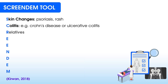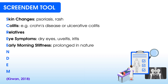R stands for relatives. If a patient explains they have a family history of something like psoriatic arthritis or ankylosing spondylitis, we might be more concerned about the chances of that condition presenting in the patient as well. The first E stands for eye symptoms, where patients might have dry eyes, signs of uveitis or iritis — inflammation within the eyes. The second E stands for early morning stiffness, where we're looking for prolonged stiffness that lasts for more than 30 to 45 minutes, suggestive of clear inflammatory or rheumatological pathology.